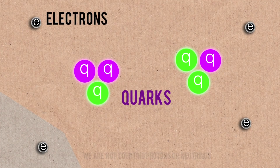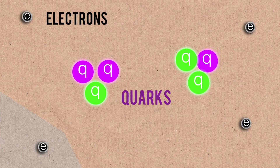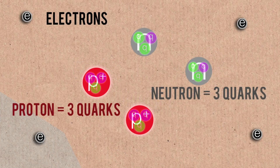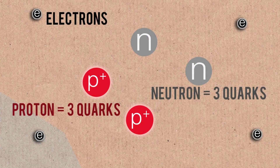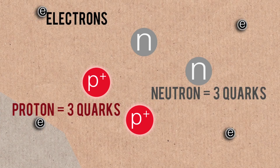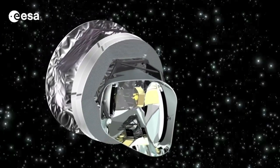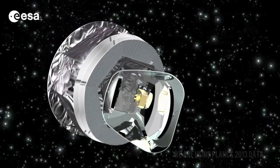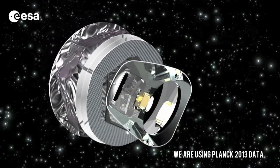The quarks are going to live inside protons and neutrons, and the electrons are going to be in orbit around those protons and neutrons in atoms. Pretty much everything else is insignificant. So how do we do this? We're going to use four bits of data.